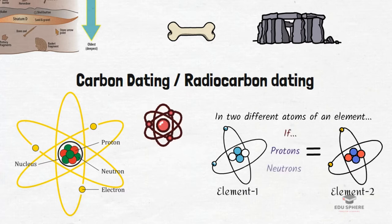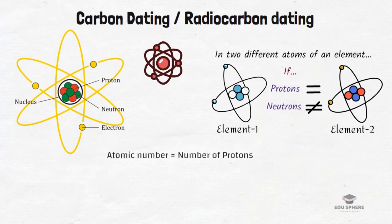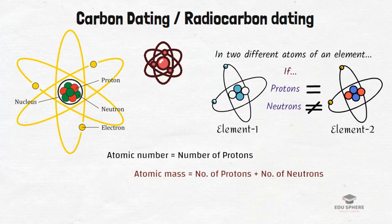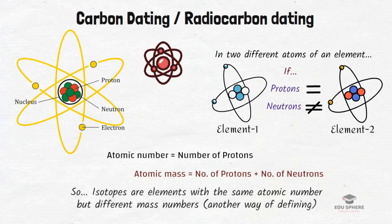These different versions of the same element are called isotopes. So isotopes are generally atoms which are having same number of protons but have a different number of neutrons. Now atomic number of an element is equal to the number of protons and the atomic mass is the sum of protons plus neutrons. So, we can safely say that isotopes are elements with same atomic number but different mass numbers.